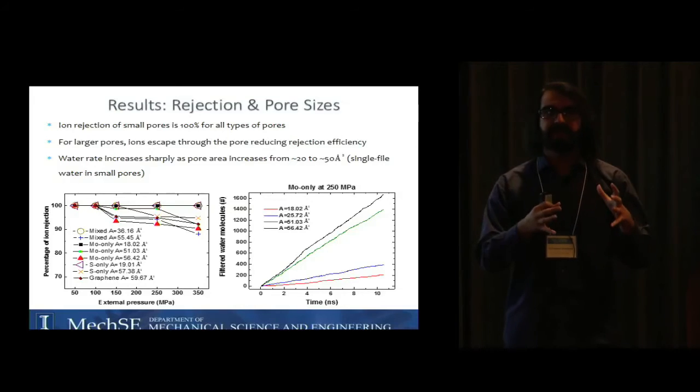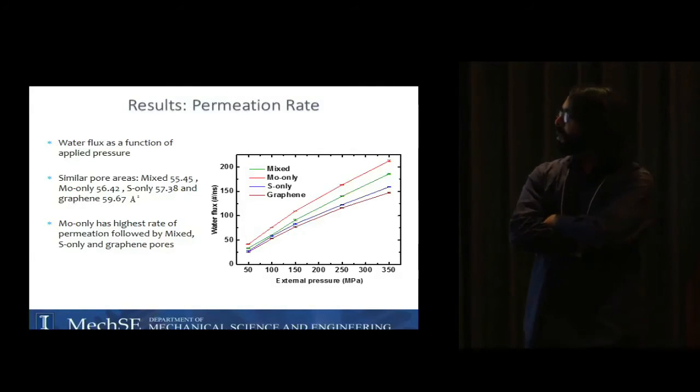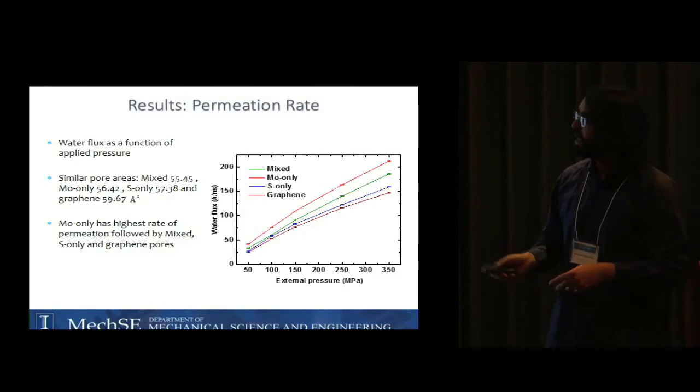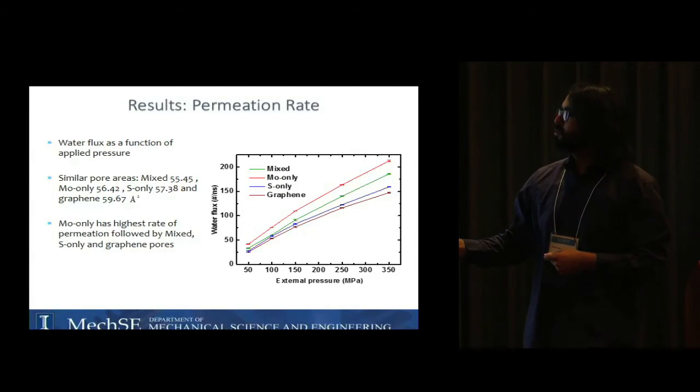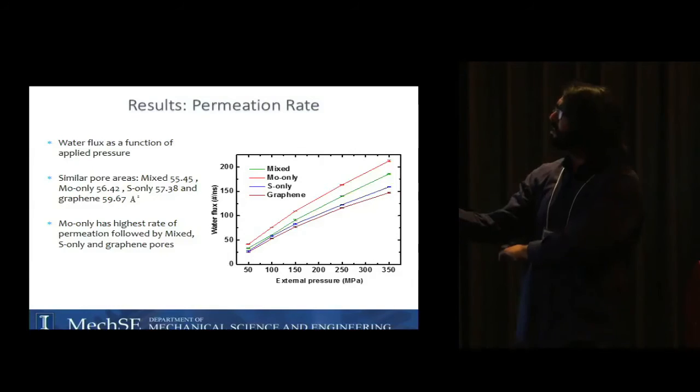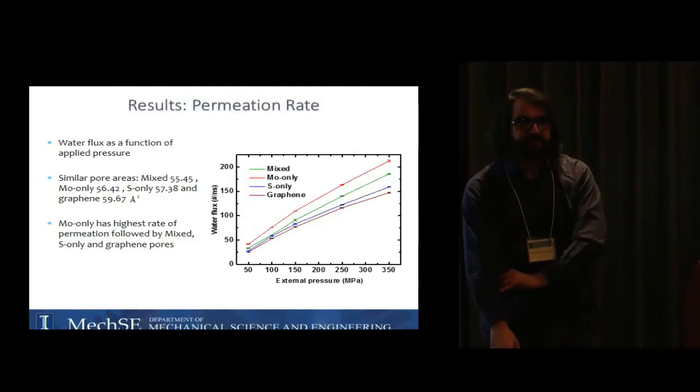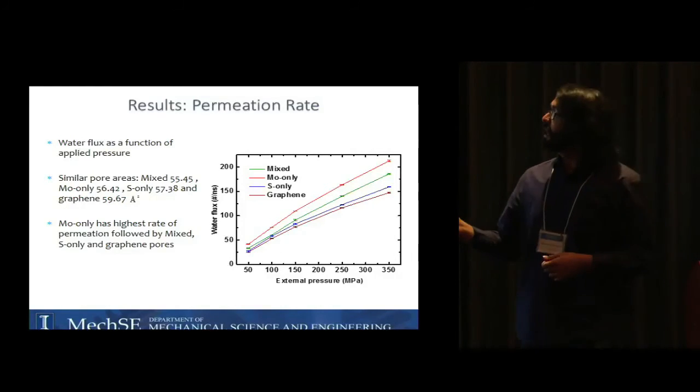Here I have the water flux, number of water molecules per nanosecond as a function of the external pressure we applied for these different pore types of molybdenum disulfide and graphene. For sake of comparison, the pore areas of all these nanopores are quite similar because we are looking at flux and that should be normalized by the area. For Mo only pore, the red curve, you see that we have the highest permeation rate followed by mix, S only, and graphene. The question is why do we have higher